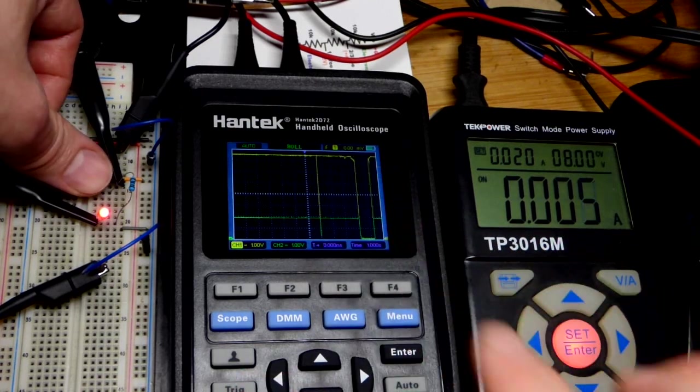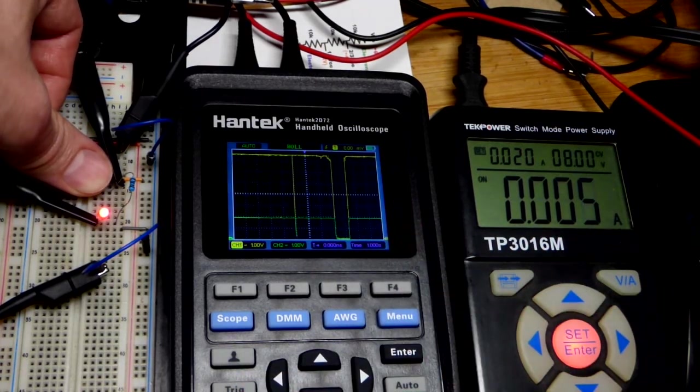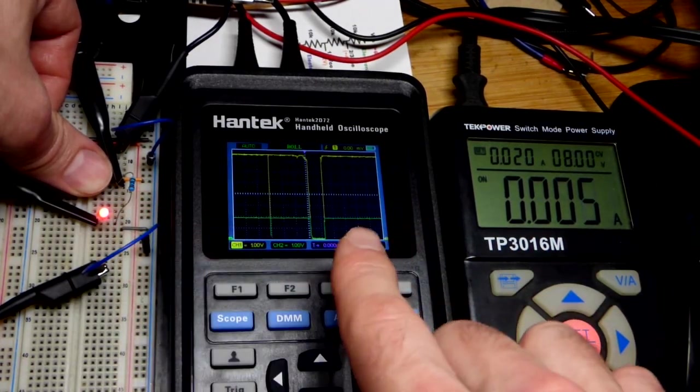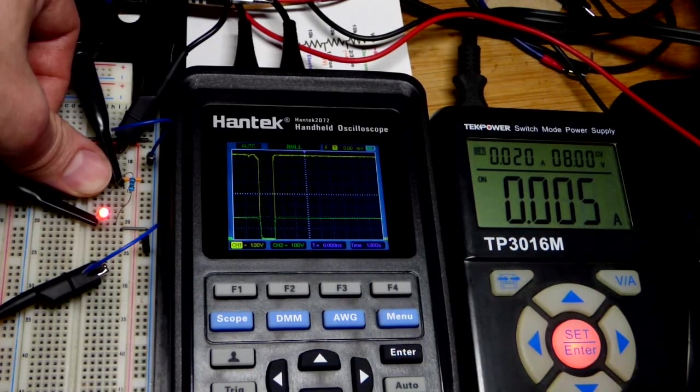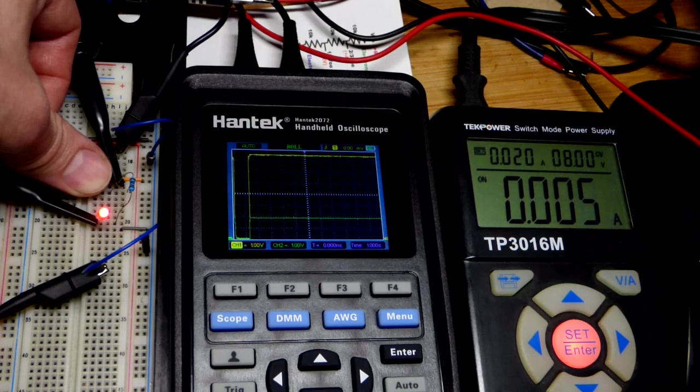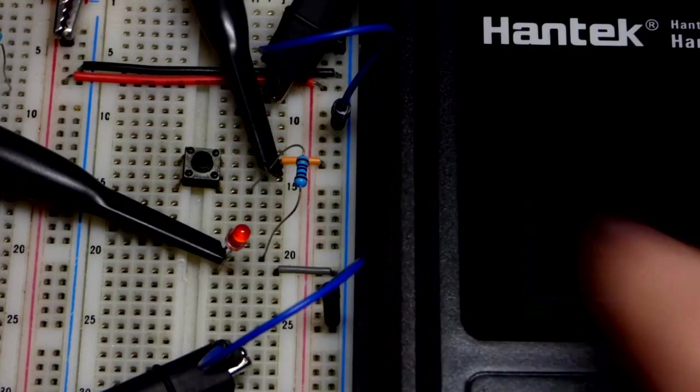With six volts across the 1000 ohm resistor, for each volt across it you get one milliamp of current through it and also through the series components. Now we're going to double the current through the circuit.